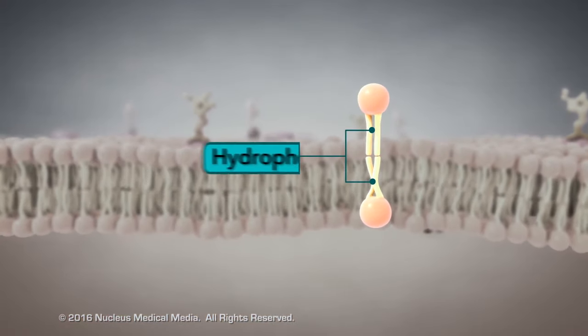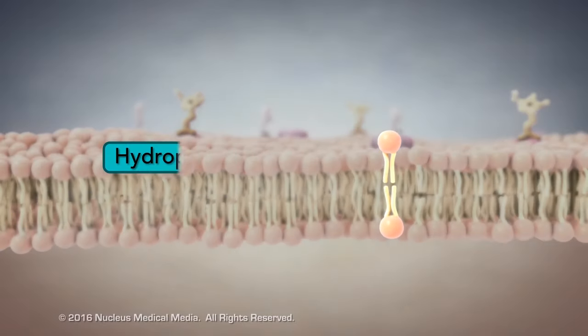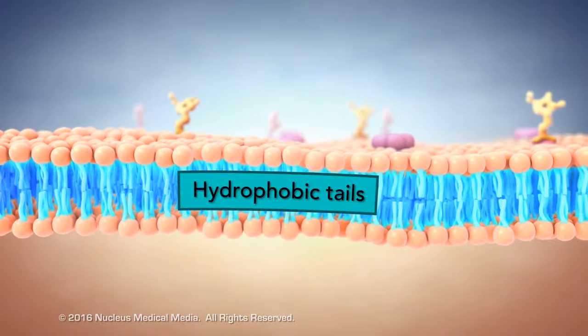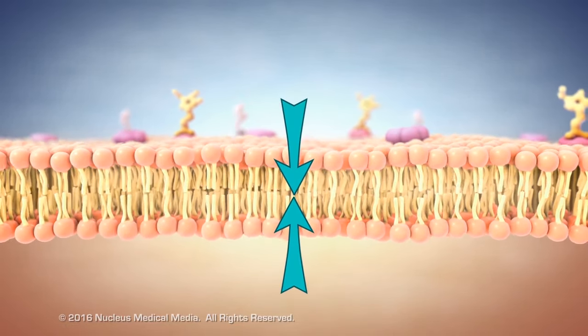The phospholipid tails are hydrophobic, which means watery areas repel them, so they orient toward each other in a direction as far away from the watery content as possible.